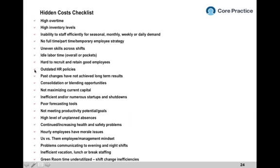I want to spend the last few minutes on a checklist. This is a hidden cost list for manufacturing — we have versions for every industry. Print it out, sit down with your management team, have everybody take a sheet and identify where your biggest hidden costs are. You may hear things like overtime is the biggest problem — but from a cost perspective, we've learned today that overtime is about to change the world. Inventory levels are another one: in the old days, everybody worked 40 hours and inventory went up and down; now we're asking employees to go up and down instead, and employees don't like that.